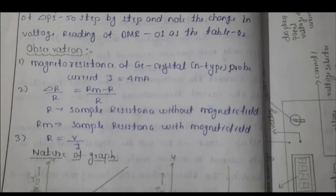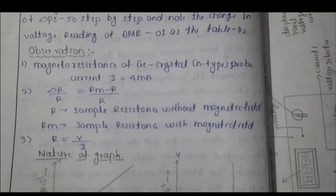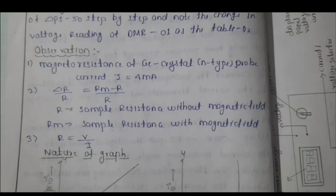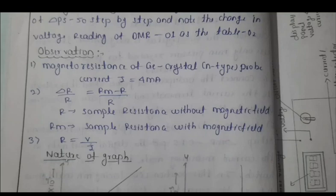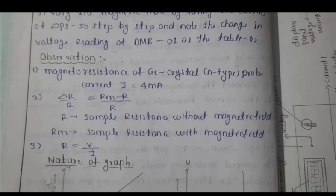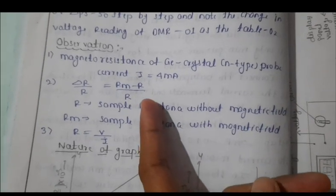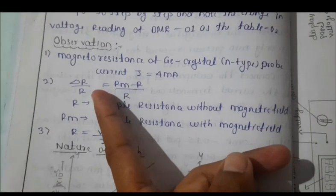The germanium sample is present between these. First you should note down the observations. Here, for magneto resistance of germanium sample, the constant current supply we are giving is about 4 milliampere. The formula to calculate is the ratio of change in resistance to the resistance.